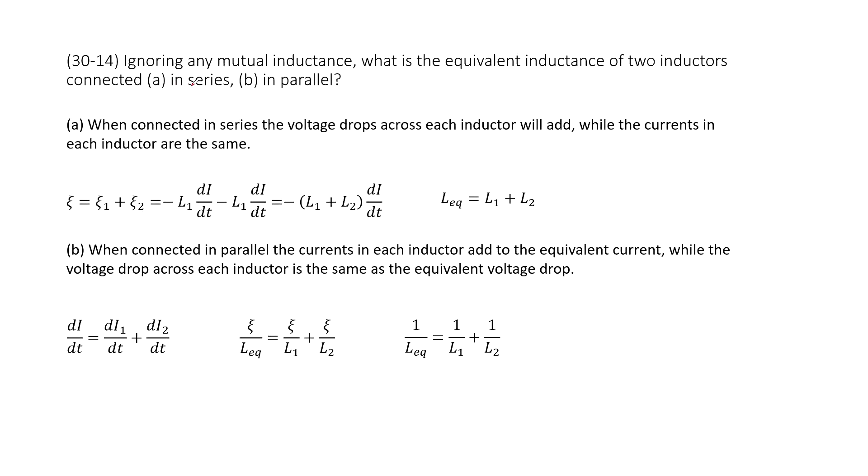First, when connected in series connection, these two inductors share the induced EMF. So epsilon 1 plus epsilon 2 equals the total induced EMF. We can write epsilon 1 as negative L1 di over dt and epsilon 2 as negative L2 di over dt. Then we can easily see the equivalent inductance should be L1 plus L2.